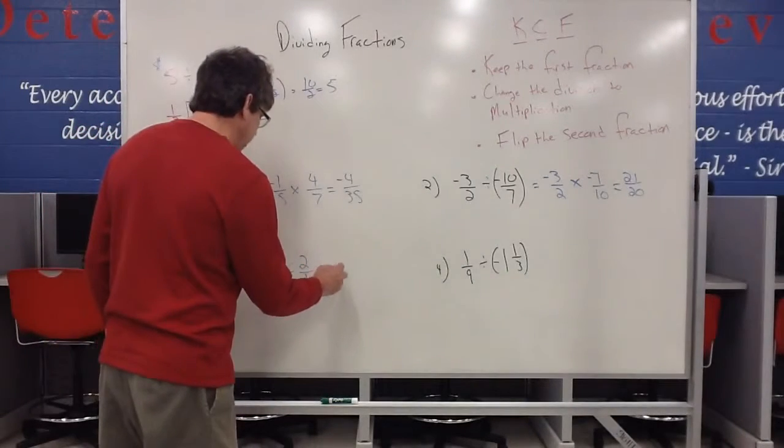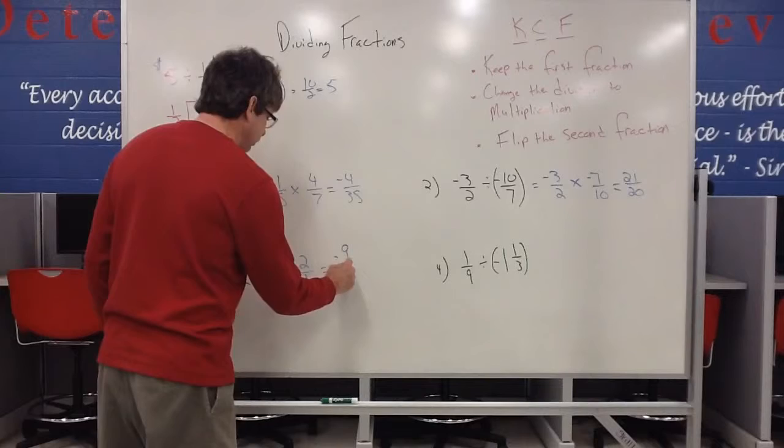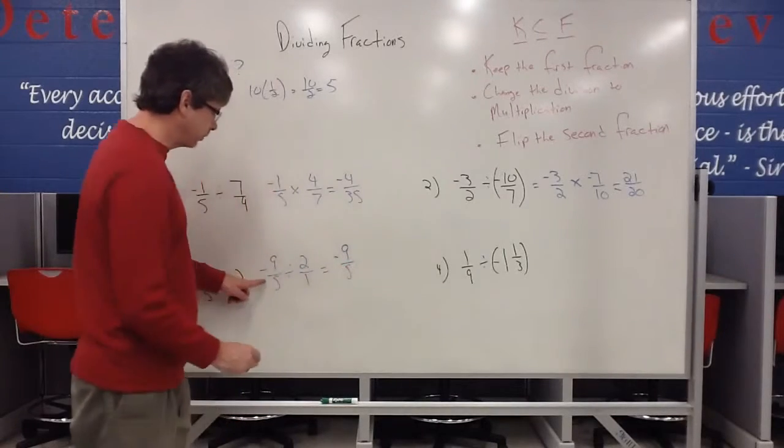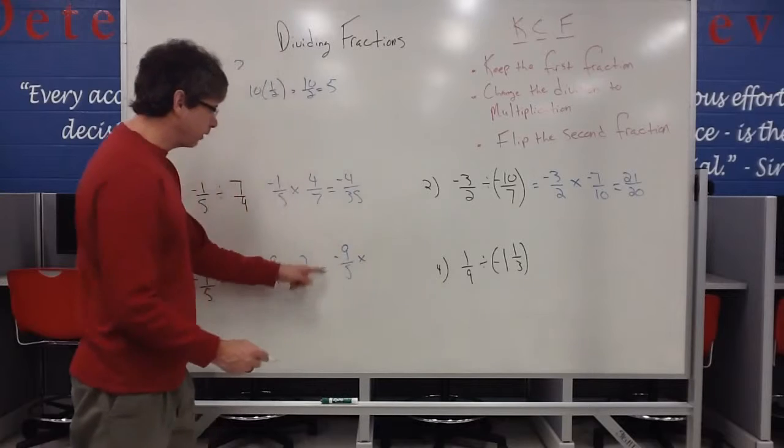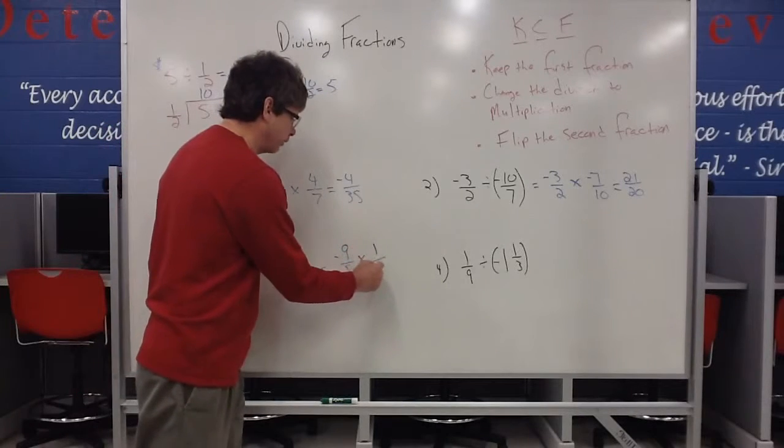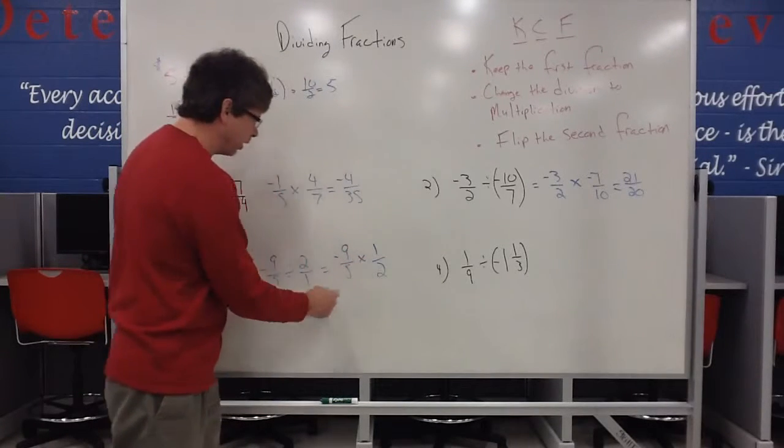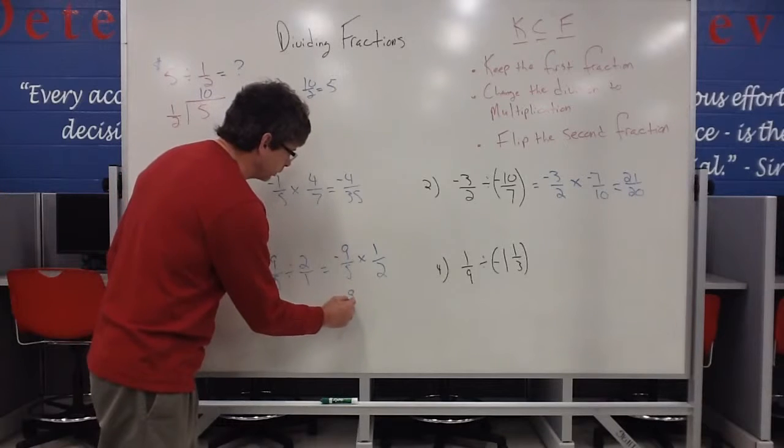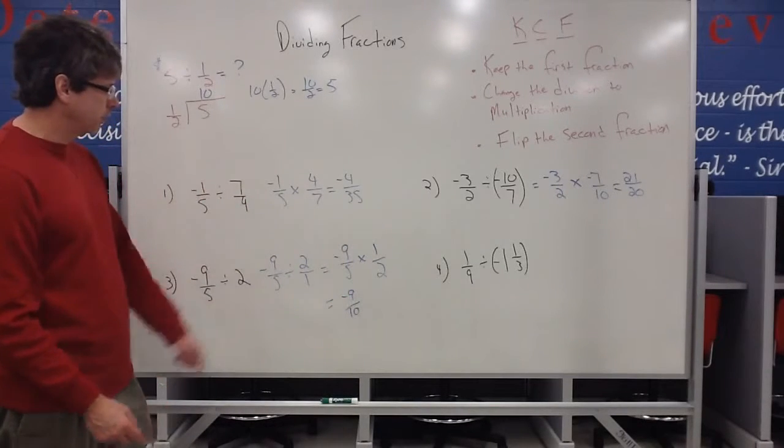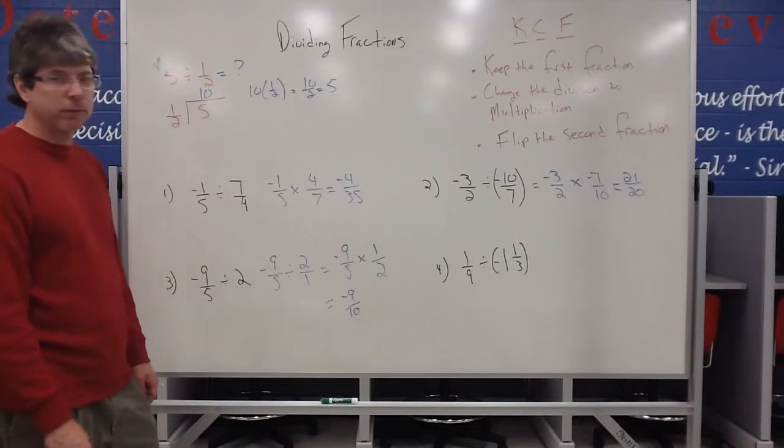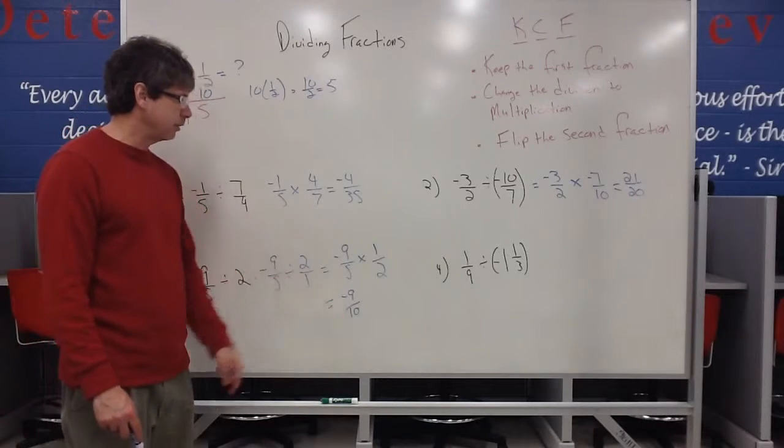Now we can change this to negative nine-fifths. So we're going to keep the negative nine-fifths, and we're going to change the division to multiplication, as long as I flip that to a one-half. If we multiply straight across, we get negative nine over ten. So it looks like nothing happens there. That's solid. So it just simplifies down to, or stays as negative nine-tenths.